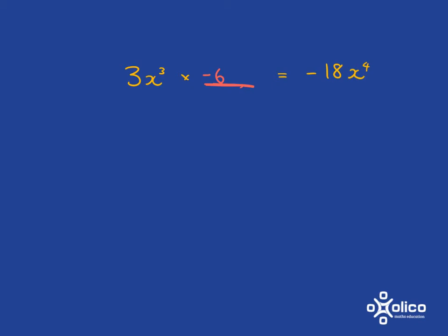And you could also have just done that by saying negative 18 divided by 3 gives you negative 6. And then if you're going to say x cubed multiplied by what gets you to x to the 4, well, hopefully that's easy for you to see that it's just x to the power of 1, which we write as x.